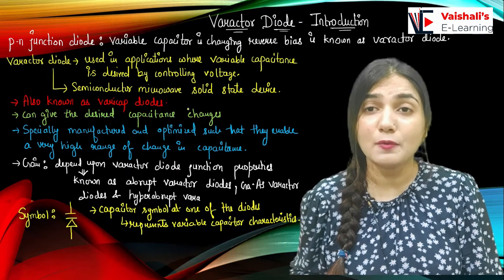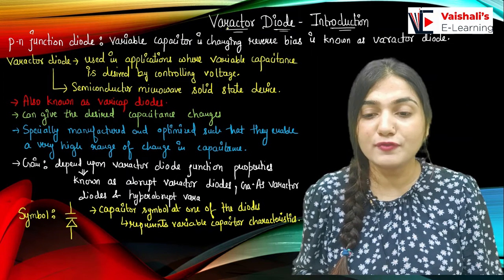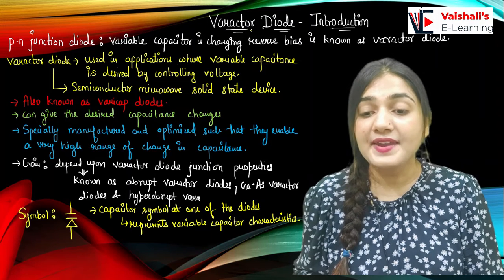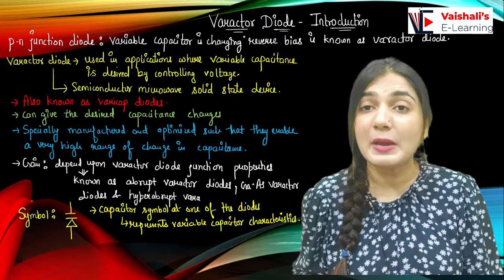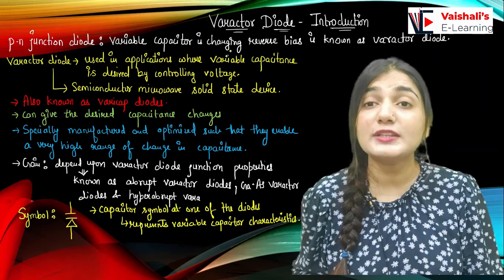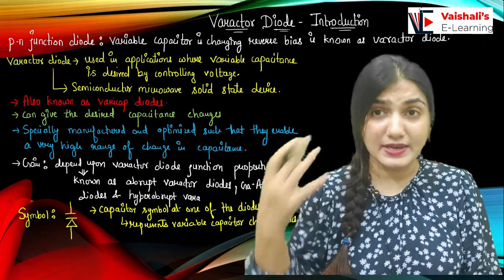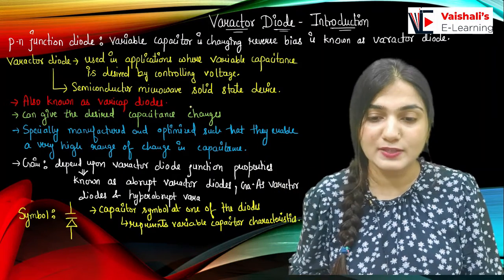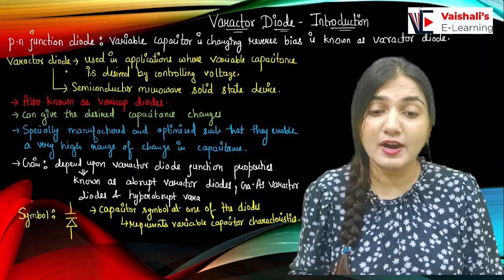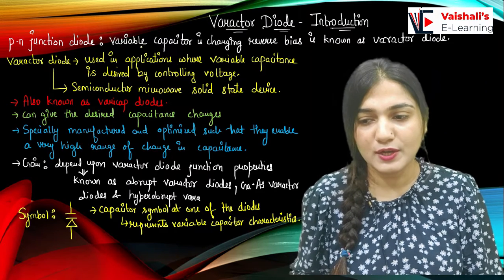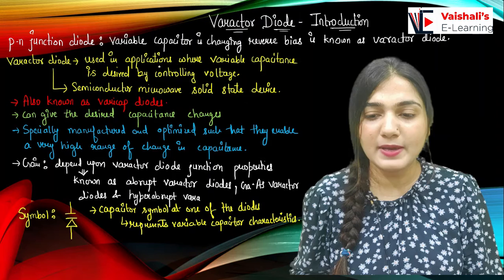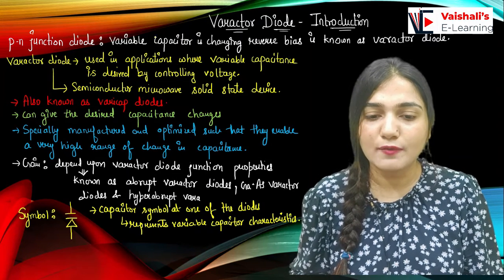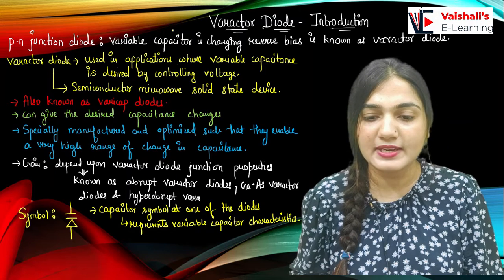What does the word Varactor mean? The word Varactor is made up of two words: 'var' which means variable, and 'actor' denoting the word capacitor. So it is denoting variable capacitor. This diode has variable capacitance and the capacitance value can be changed with the reverse bias voltage. So Varactor represents variable capacitor.